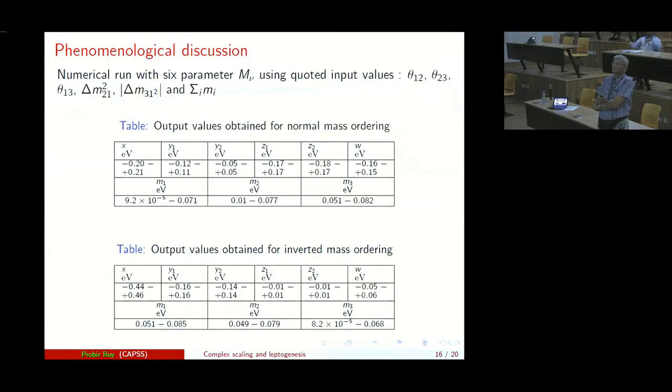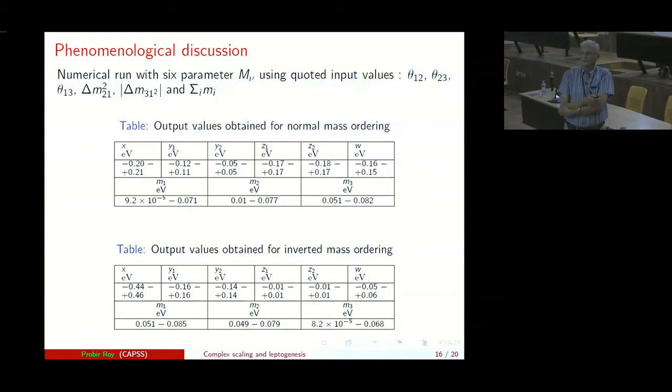So this baryogenesis via leptogenesis for this model works only for the intermediate regime where M_1 is between 10 to the 9 and 10 to the 12 GeV. Let me now turn to a phenomenological discussion. We have considered a numerical run with a six parameter complex extended neutrino mass matrix and used the three sigma ranges for all these values. And the parameters for normal mass ordering of the light neutrinos are found to be these ranges where the neutrino masses are then found to be in electron volts in these ranges. Whereas for inverted mass ordering that's also allowed and they are found to be these ranges. So you see whereas with simple real scaling only inverted mass ordering was allowed and theta_13 was 0 and one of the neutrino masses was 0. With a complex extended scaling hypothesis you have realistic neutrino masses possible and both normal and inverted ordering are allowed. So now consistent with the three sigma ranges of the neutrino mass data.